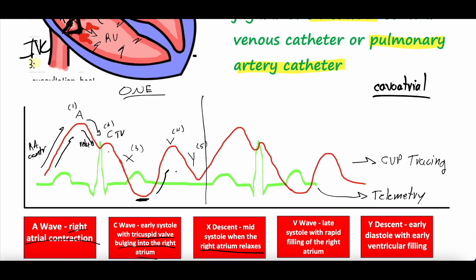At the trough of the X descent, the pressure then rises into the V wave because the right atrium is now empty of blood and begins to fill again. The right atrium originally contracted, then relaxed; as it relaxed, the right ventricle contracted pushing the tricuspid valve into the right atrium causing the C wave. The right atrium kept relaxing through the X descent, and now the V wave represents late diastole with rapid filling of blood back into the right atrium.